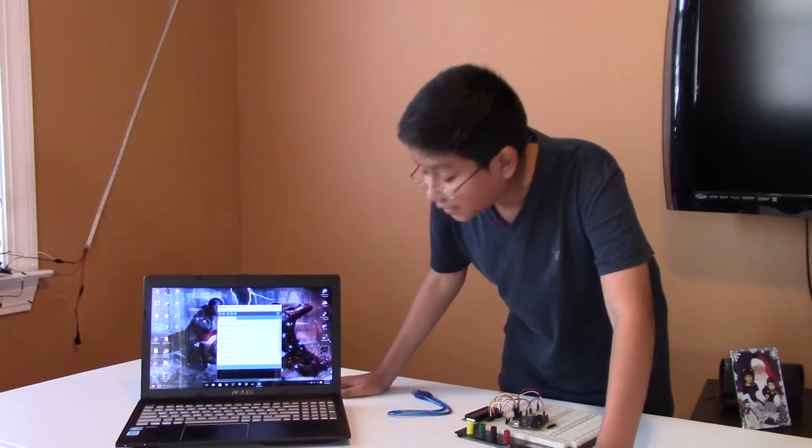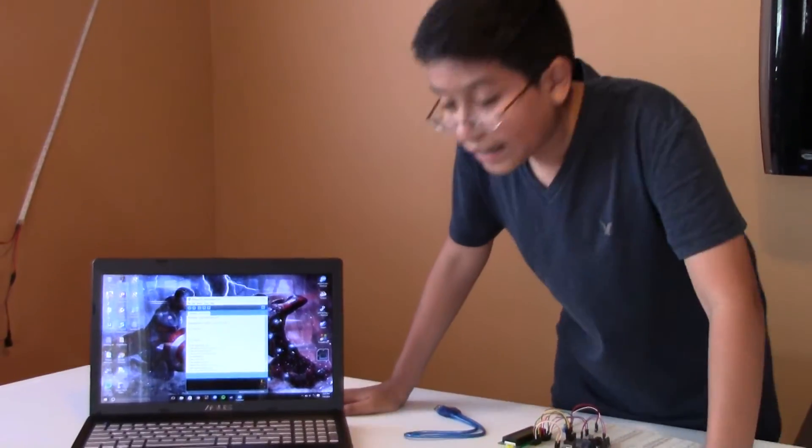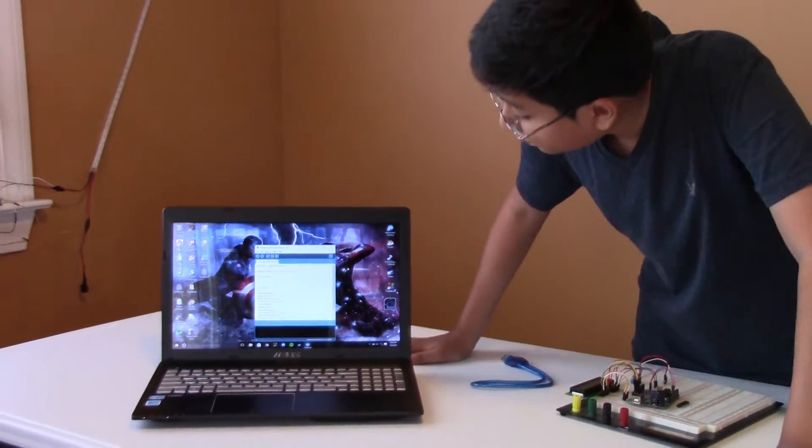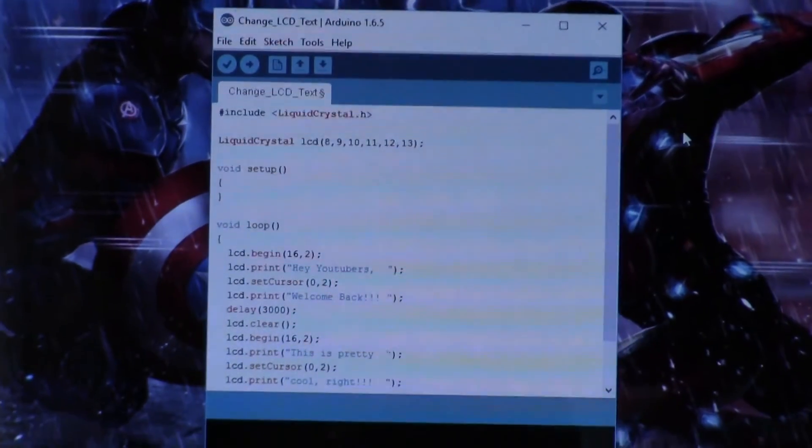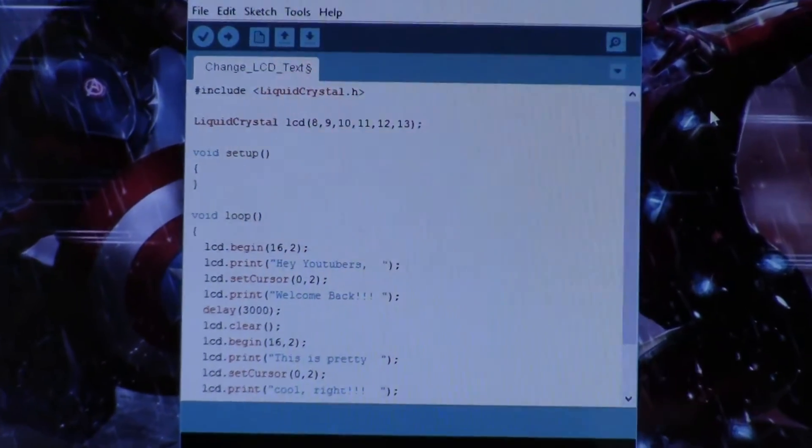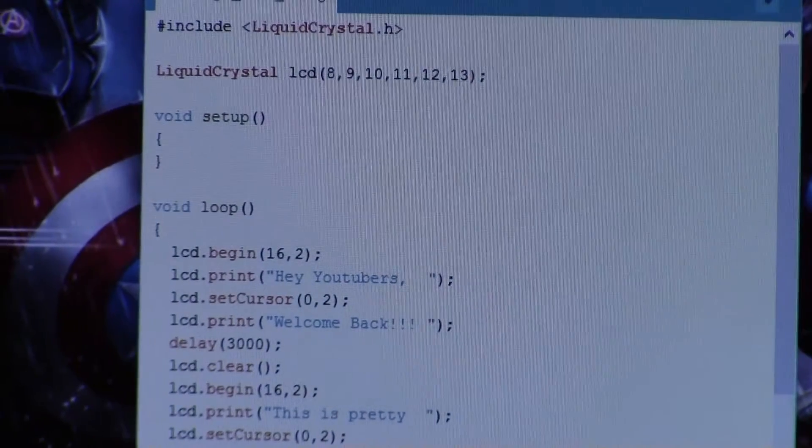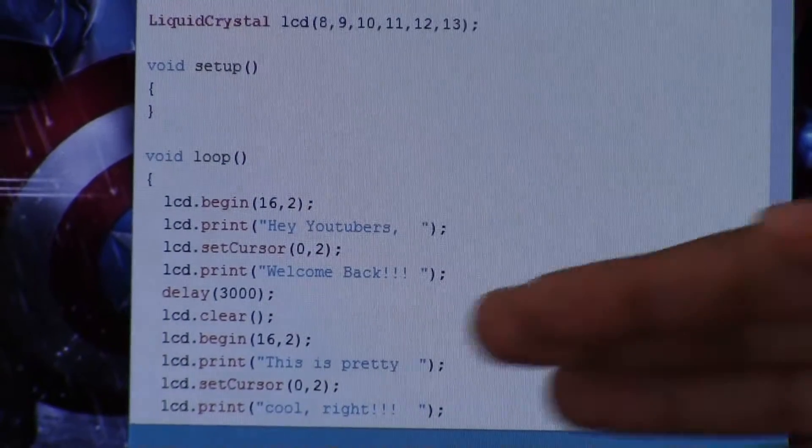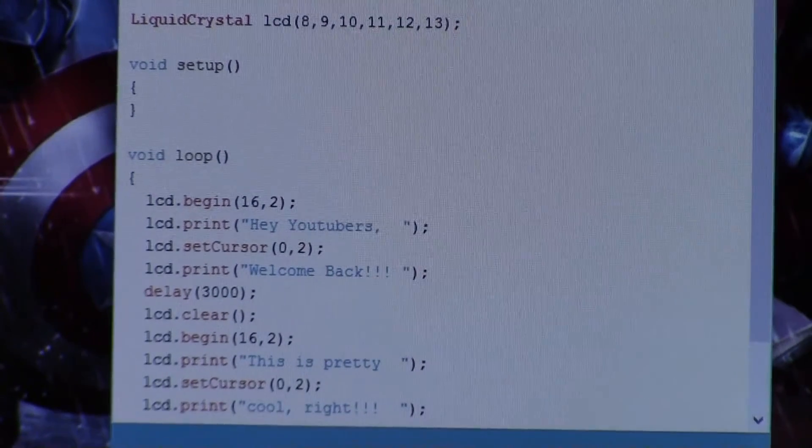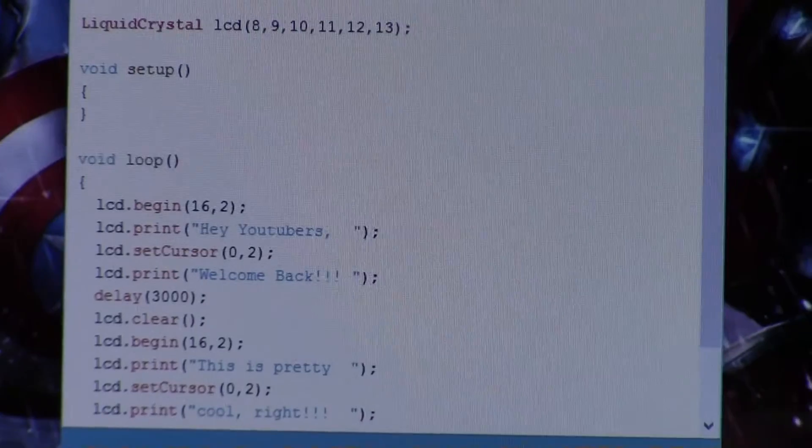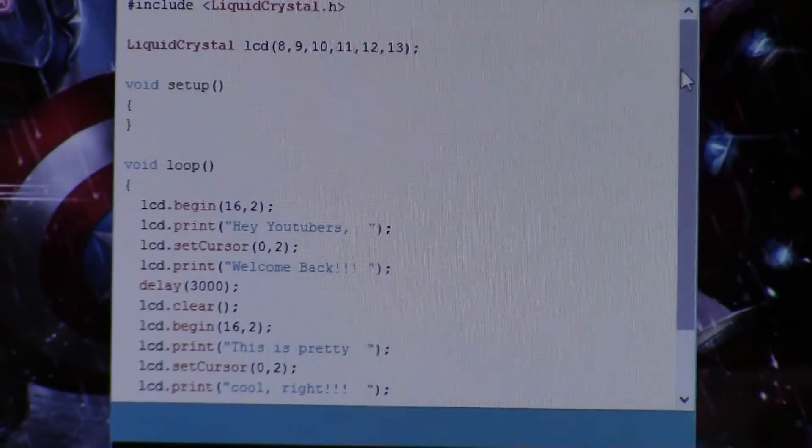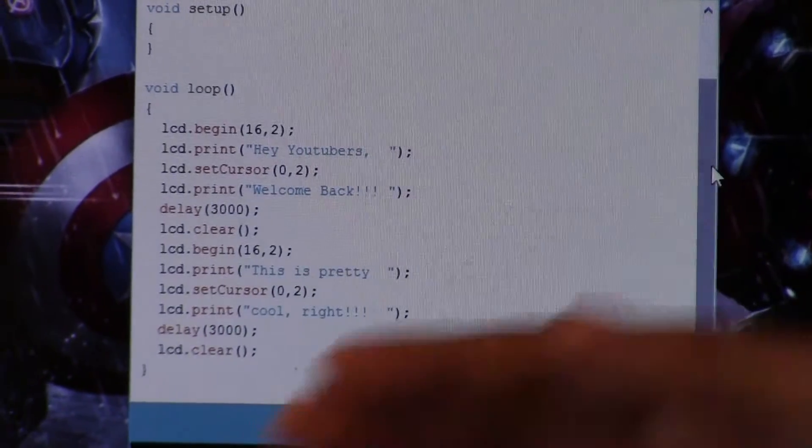That's why I'm only putting this is pretty. Then we're going to put LCD set cursor and then to the next line, zero, two. Then LCD print and I put in the parentheses cool right. Remember it said this is pretty cool right, and 16 characters, remember no more.